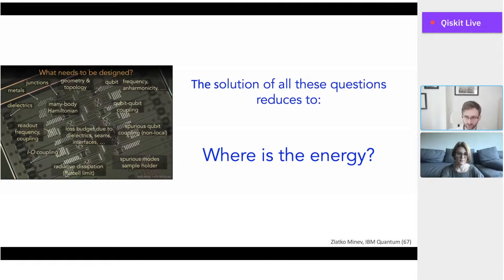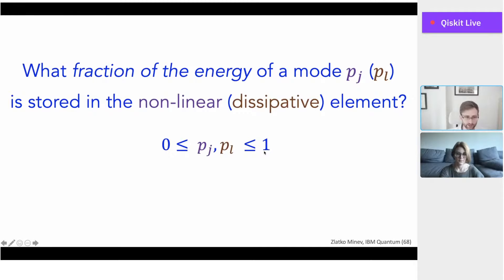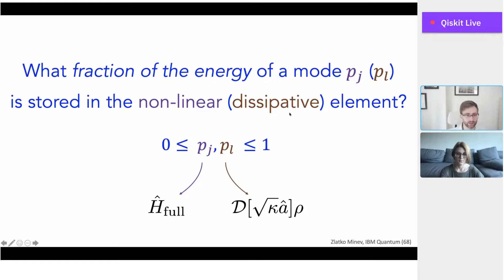Coming back to all the questions we have to simultaneously answer when designing a quantum device, I'd like to introduce the idea that the solution reduces to a simple single one: where is the energy? If you know where the energy is, you can answer all of these questions in a unified, systematic way. More precisely, you have to ask: what fraction of the energy of a mode — such as the transmon mode or the resonator mode — denoted by P sub J for junctions and P sub L for lossy elements, is stored in the nonlinear or dissipative element, such as a Josephson junction or a lossy dielectric?